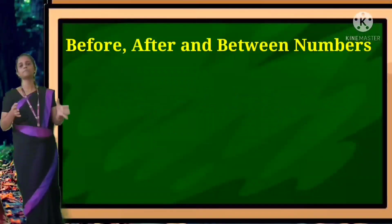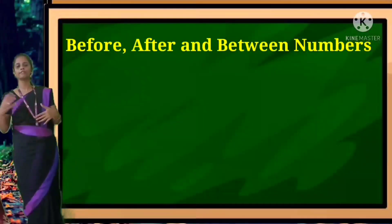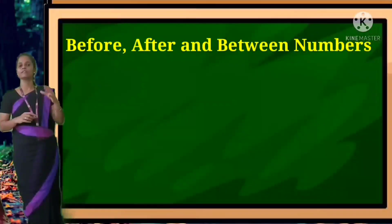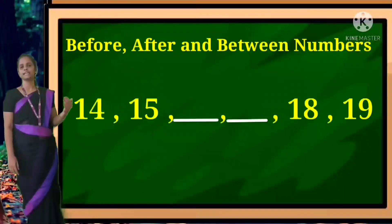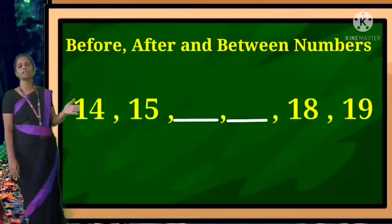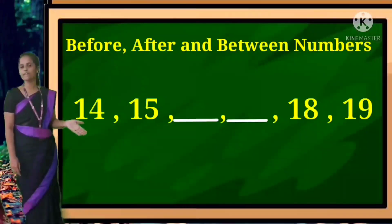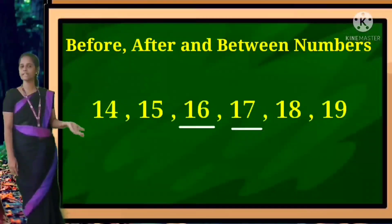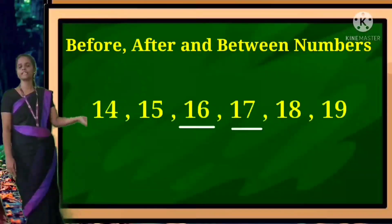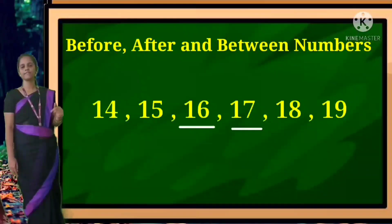Now we are going to revise between numbers — numbers missing between two given numbers. Example: 14, 15, dash, dash, 18, 19. What comes after 15? 16. After 16? 17. Then 18 and 19 are written. That is the first example.